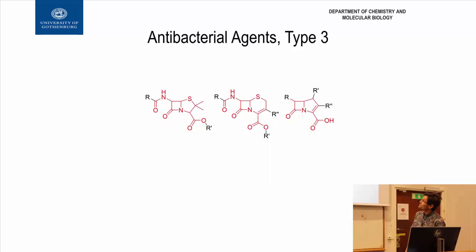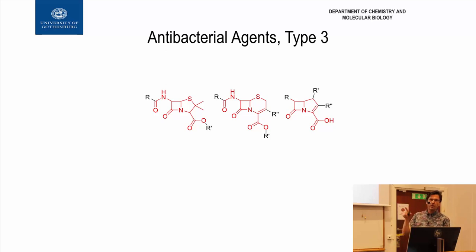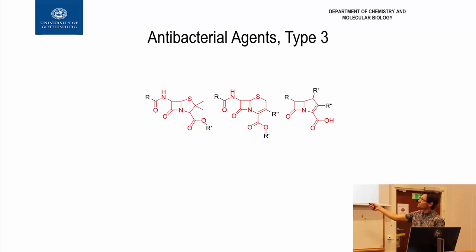Then we have these beta-lactams. When I say type 3 here, that refers to that figure where I had four different mechanisms. Type 3 was those that interfered with the cell wall of the bacteria. So all these do the same sort of thing — they interfere with cell wall synthesis in the bacteria.